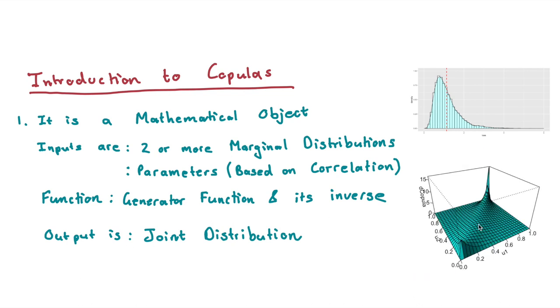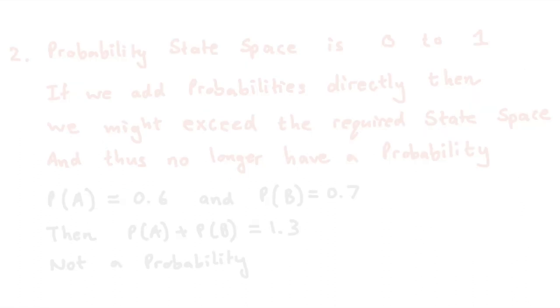And this is a quick little preview of what they look like. So very quick introduction on copulas. They're mathematical objects. Their inputs are marginal distributions. Some of them have parameters based on correlation. Some of them have functions with generator functions and their inverse. But all of them have this output, which is the joint distribution. Let's maybe explore this idea in a little bit more detail.